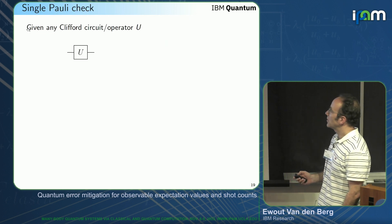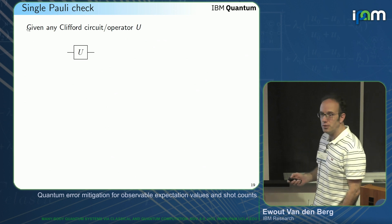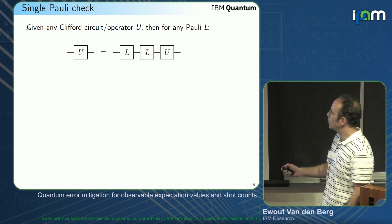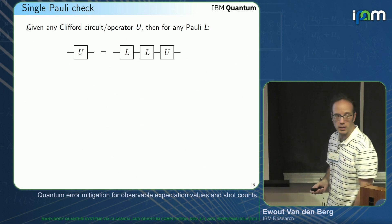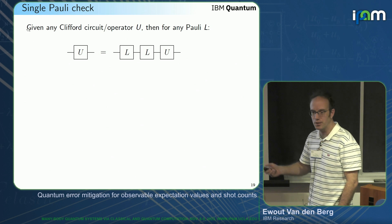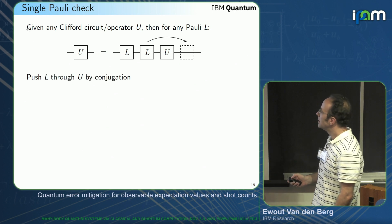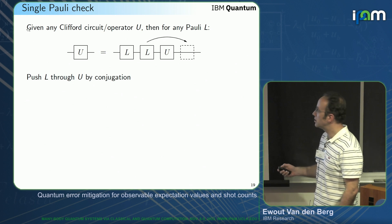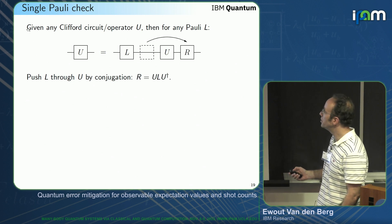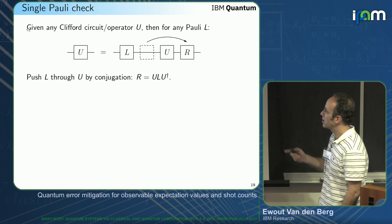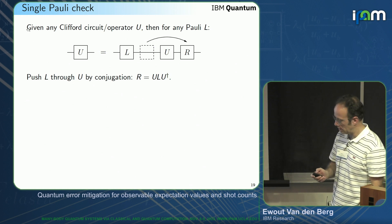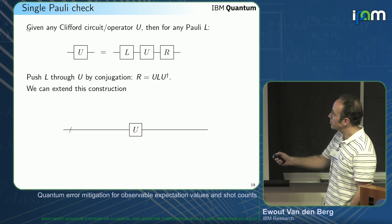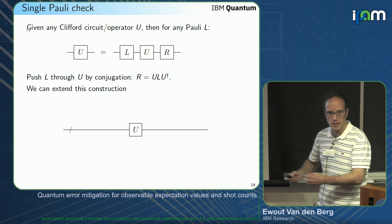If you choose any Pauli L, you can apply the same Pauli before the gate twice — they cancel, so you haven't done anything yet. By applying conjugation, we can push L through U to the other side, where R is just the conjugation of L by U. That means we still have the same circuit, but we've just added Paulis on either side.